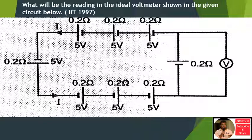The reading of voltmeter is the terminal voltage. That is equal to V equals E minus Ir.